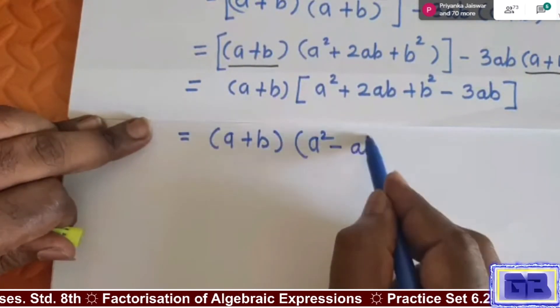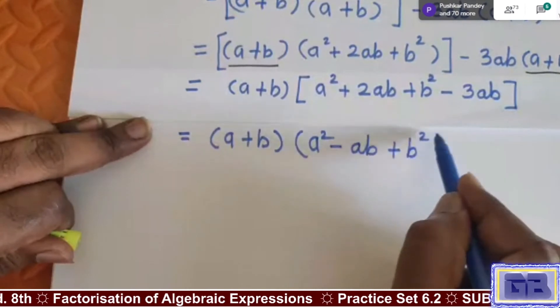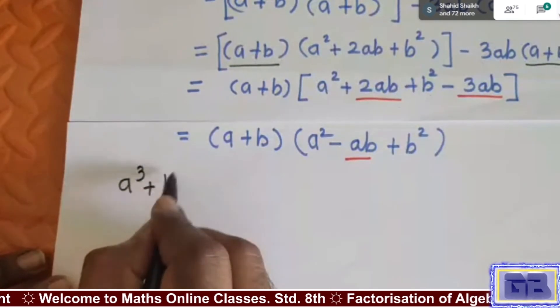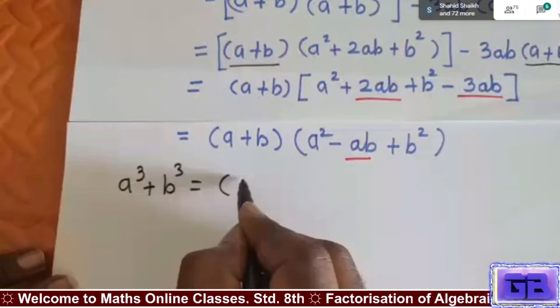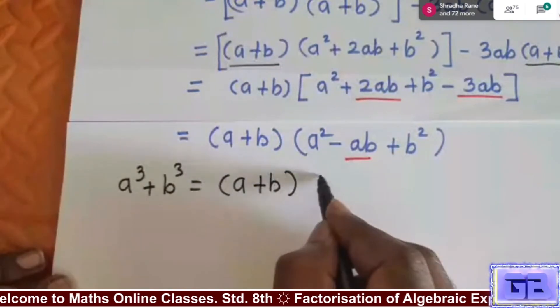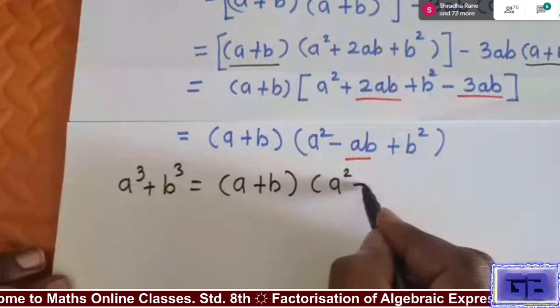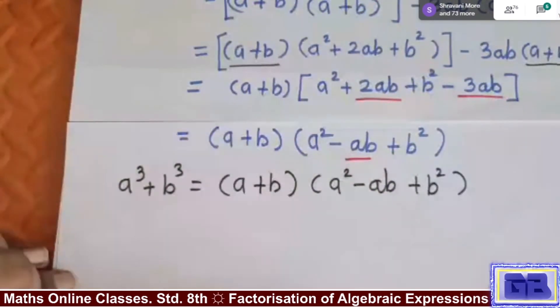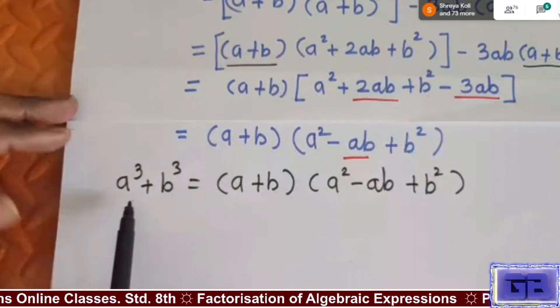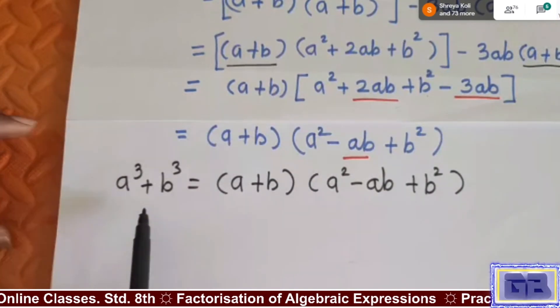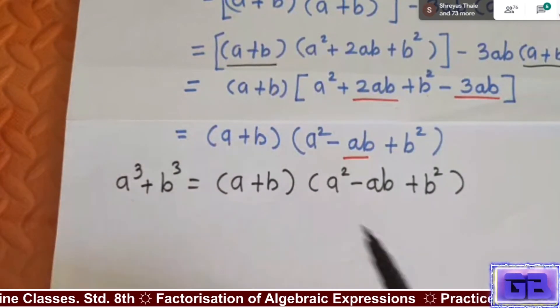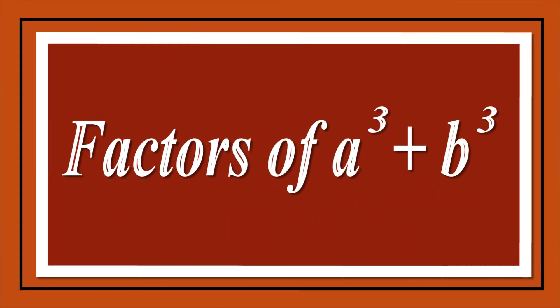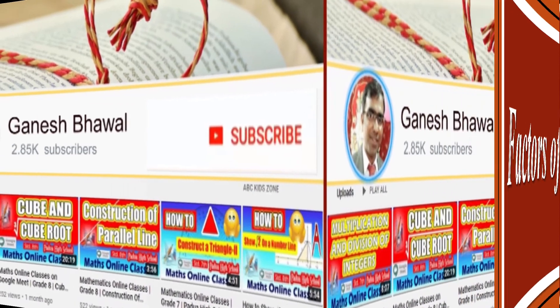So finally we got a³ + b³ equals in first bracket (a+b) and in second bracket a² - ab + b². On the basis of this formula we have to solve Practice Set 6.2. That's all for this video.